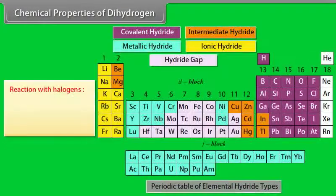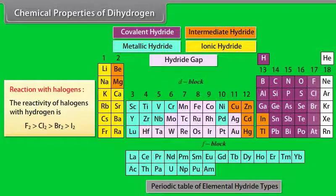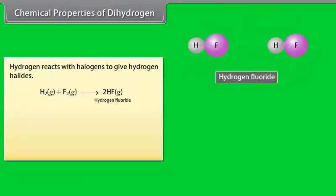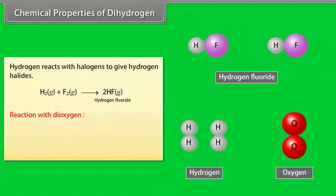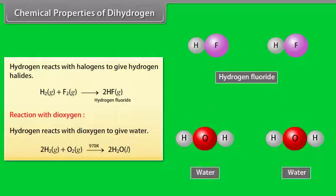Chemical properties of dihydrogen. Reaction with halogens. The reactivity of halogens with hydrogen is fluorine greater than chlorine, greater than bromine, greater than iodine. Hydrogen reacts with halogens to give hydrogen halides. Reaction with dioxygen. Hydrogen reacts with dioxygen to give water.